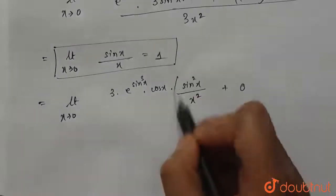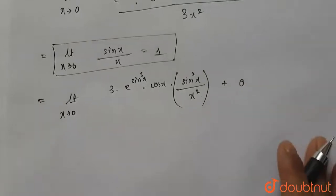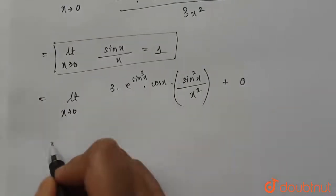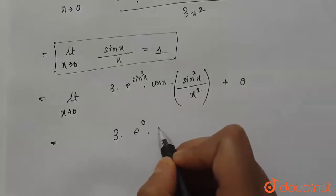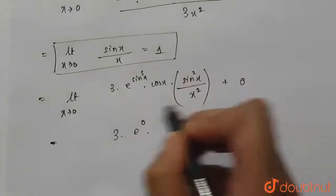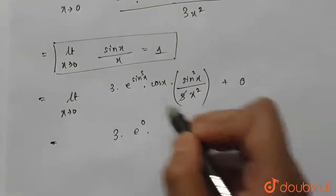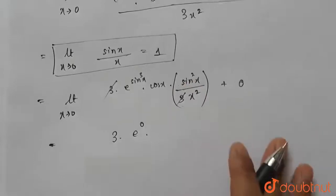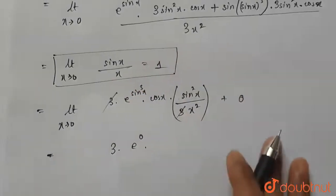Now this part—this value will equal 1. After putting 0 in these values, we get 3 · e^0 · ... there was a 3 I missed here, so this 3 and that 3 will cancel. There was a 3 in the numerator I missed, so this 3 cancels.